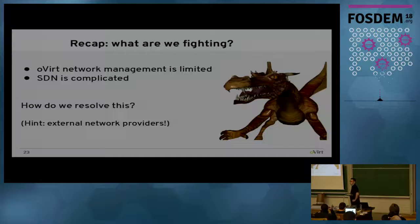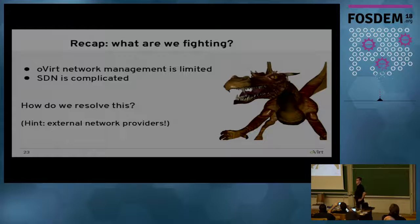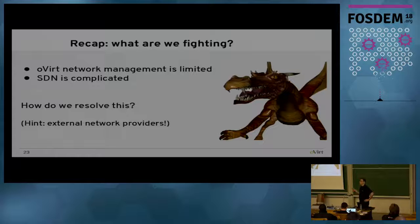Let us recap what we know so far. One: oVirt network management is limited. Two: software-defined networking is not that easy. Three: OpenStack Neutron is heavy and complicated. The problem with OVN is that we speak the OpenStack Networking API, but OVN only speaks command line or the OVSDB protocol, so you have to talk to OVSDB directly and don't have higher abstractions like network or port — you have to do it all manually.